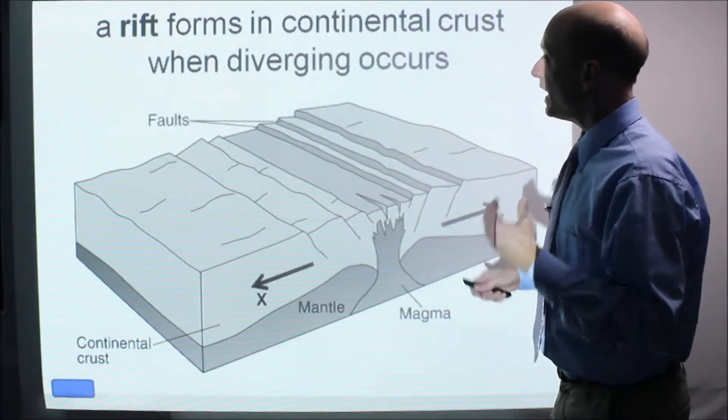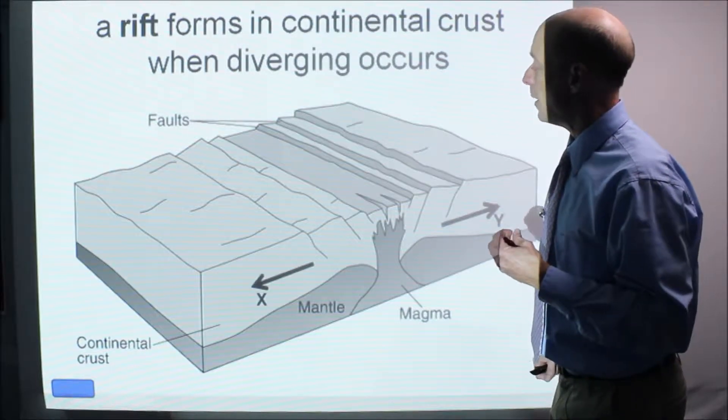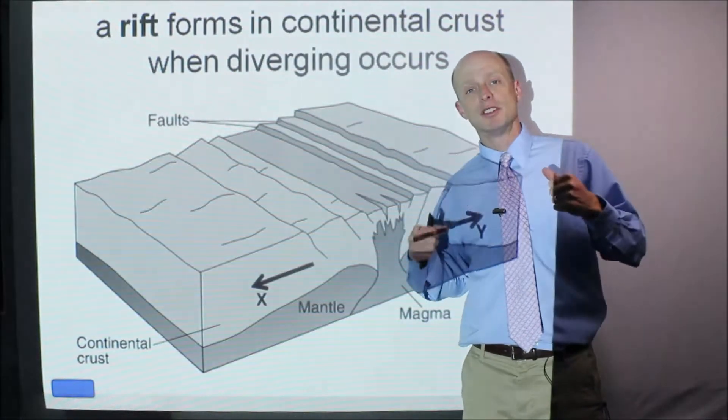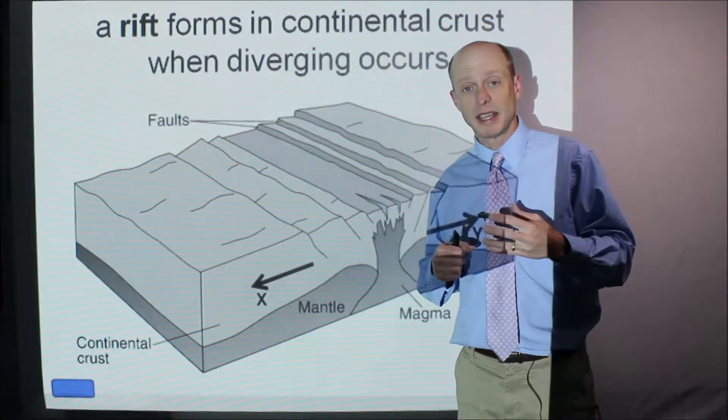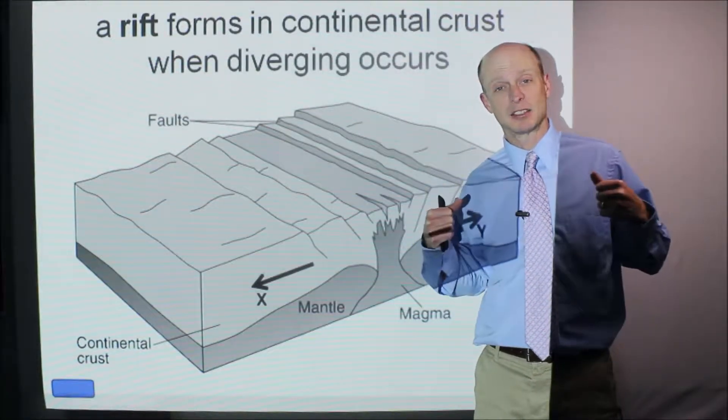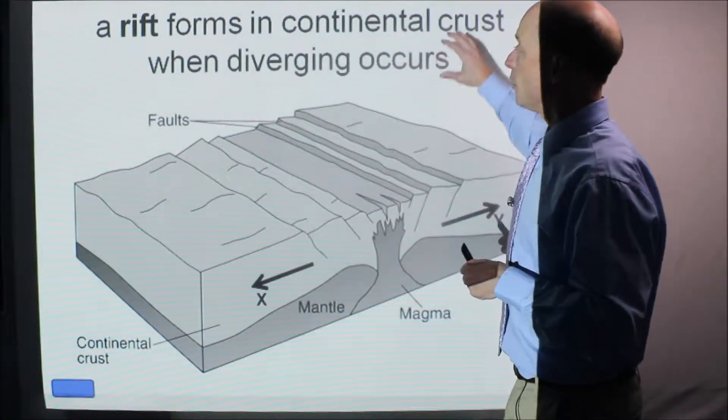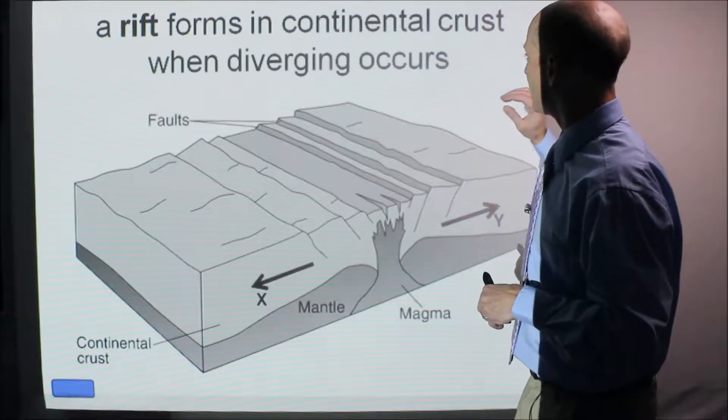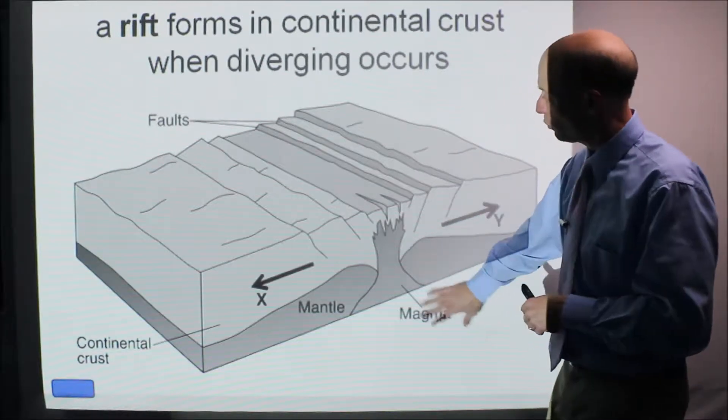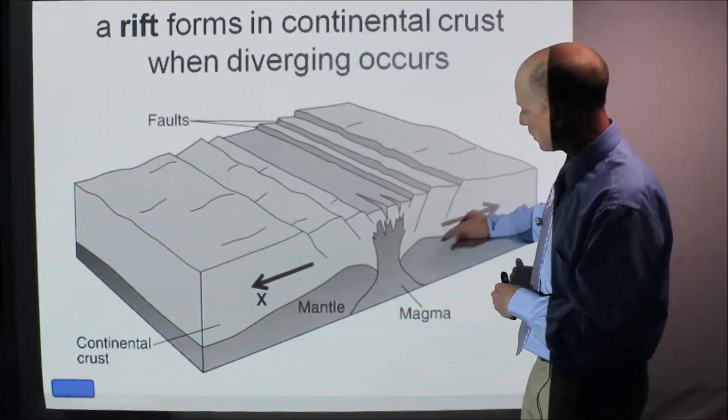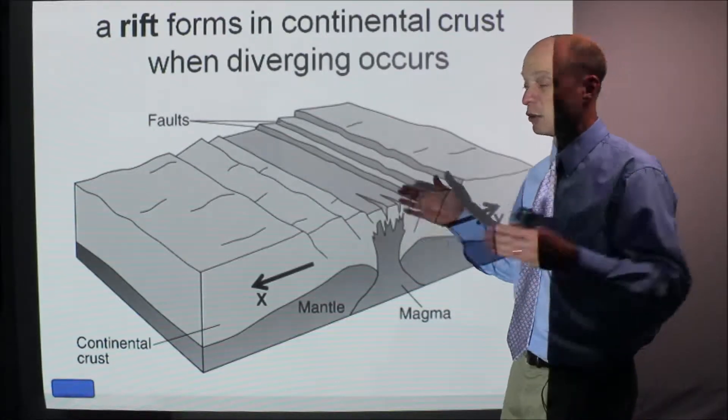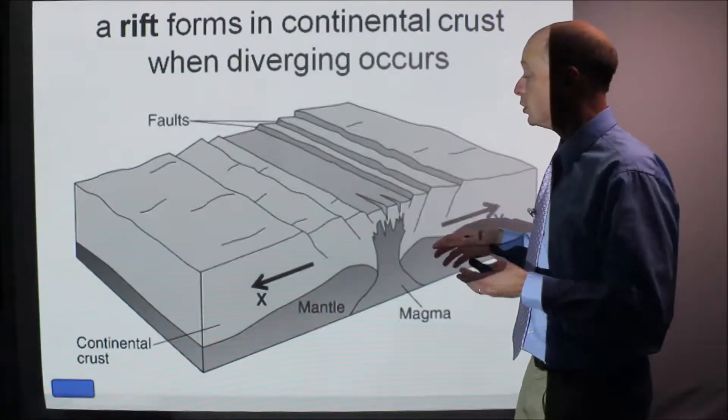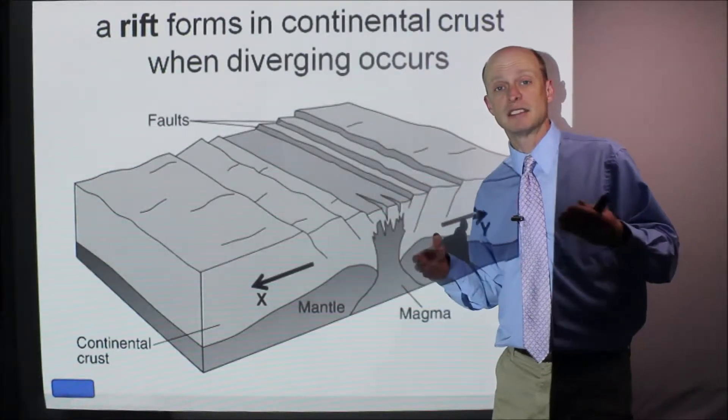Okay. So if you have divergent occurring on a continental plate, which can happen, it kind of rips a continental plate apart. It's called a rift. A rift forms in continental crust when diverging occurs. We're kind of seeing that here and the crust will get thinner and you have all of these faults and it will pull apart and it'll actually end up being two separate pieces of land at some point in the future.